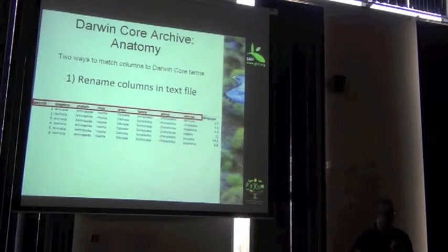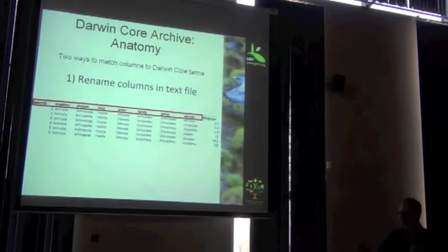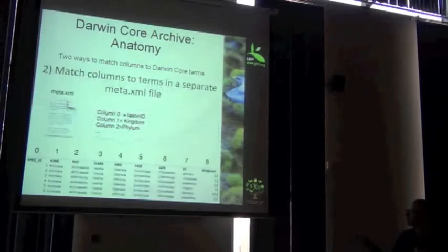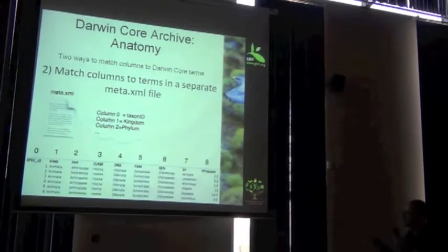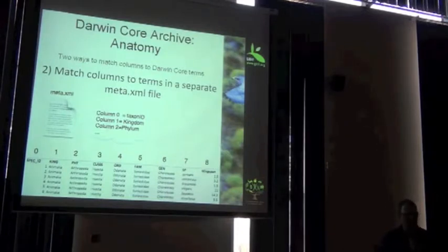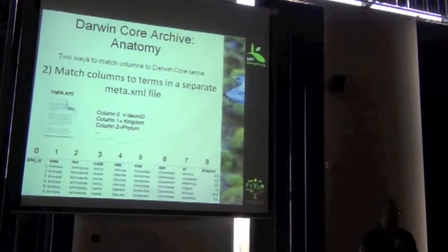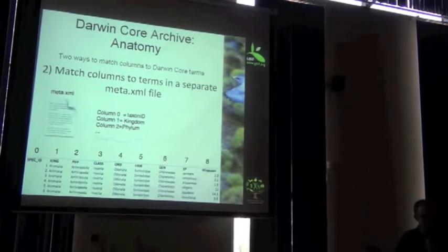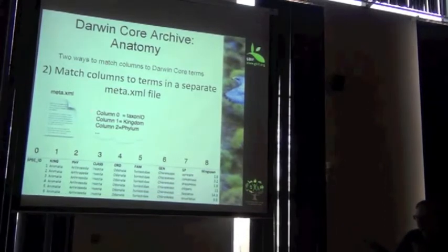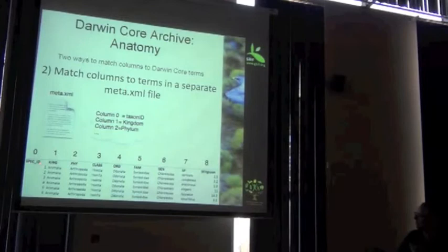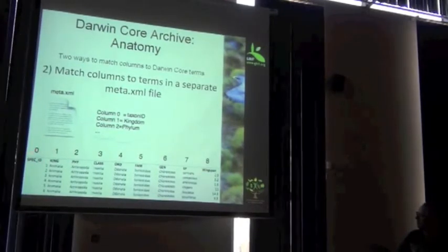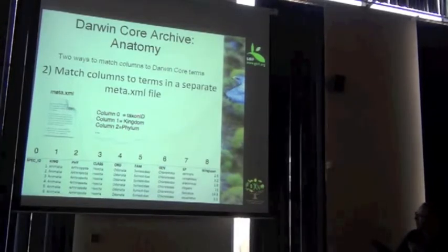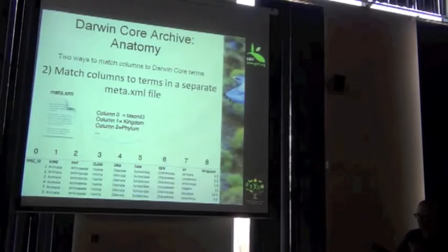And there's a couple different ways that you can ultimately match your columns to Darwin Core terms. One is you can just simply go in there and you can rename everything. Or alternatively, you can use a meta.xml file. It's an XML descriptive file which contains the mappings.